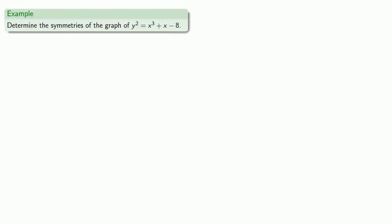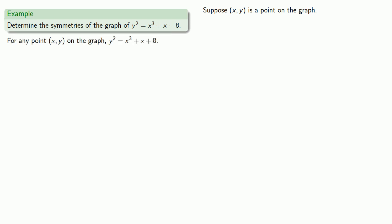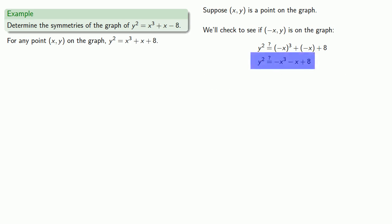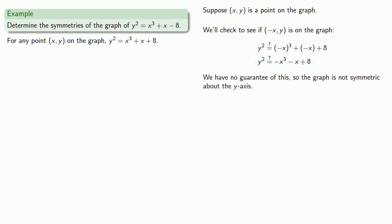Let's put those all together and determine the symmetries of the graph y² = x³ + x - 8. Suppose (x, y) is a point on the graph — so y² = x³ + x - 8 is guaranteed true. We'll check to see if (-x, y) is on the graph by substituting and simplifying. We have the guaranteed true statement, but the substituted result doesn't match, so we have no guarantee it is true. Therefore the graph is not symmetric about the y-axis.